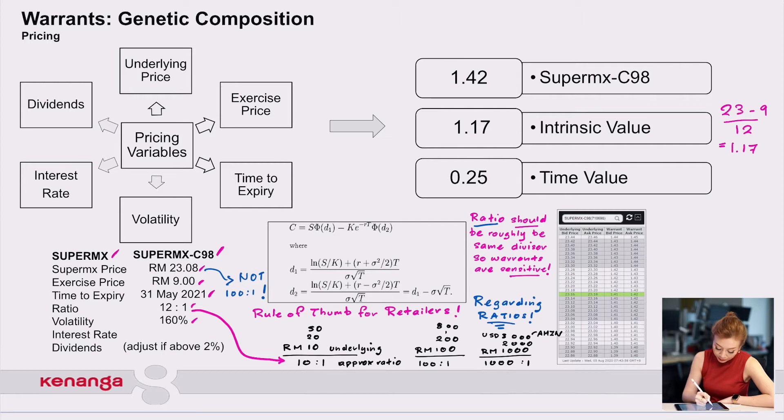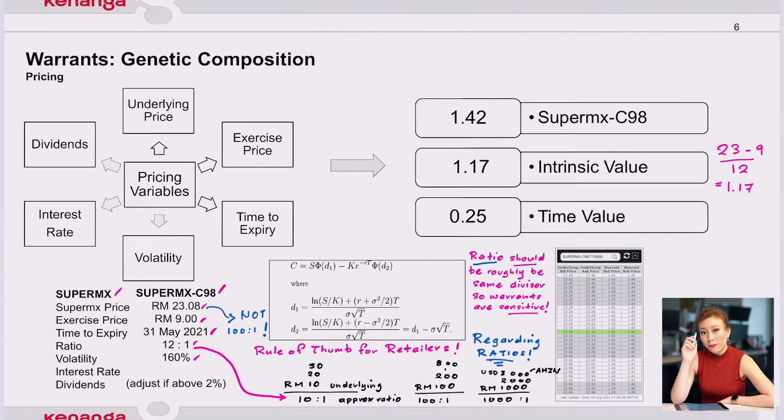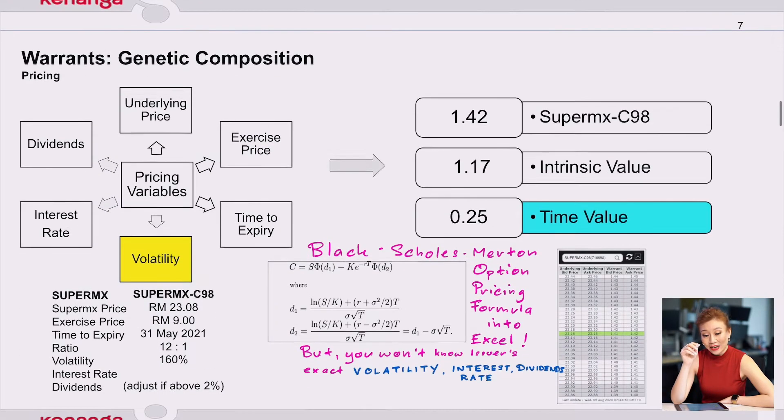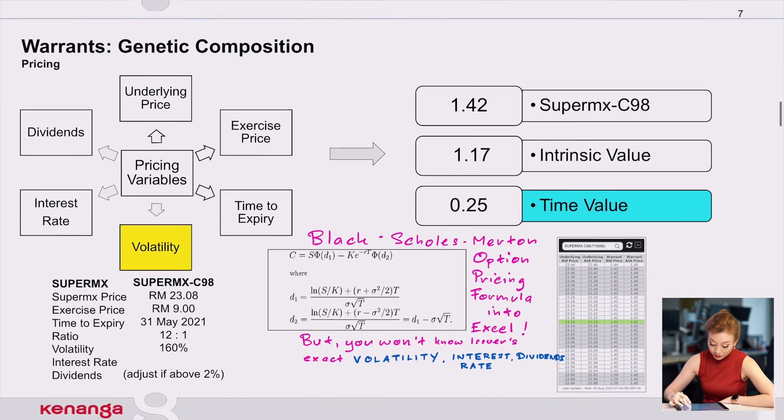The question I want to answer right now is, can you actually create on Excel your own structured warrant pricing and create your own live matrix? Yes, you can. But it will be inaccurate because of the ingredients of a structured warrant.